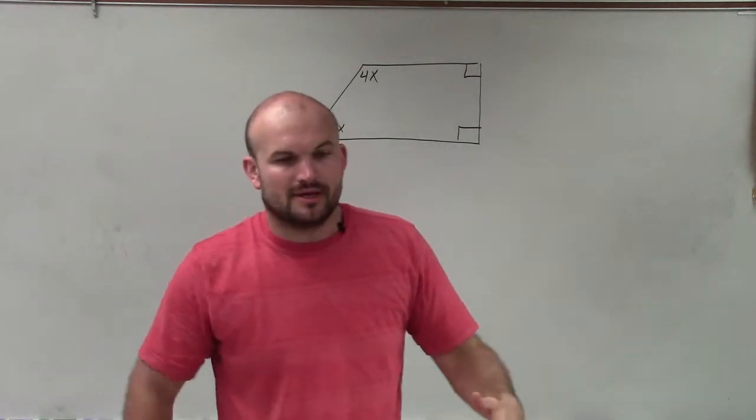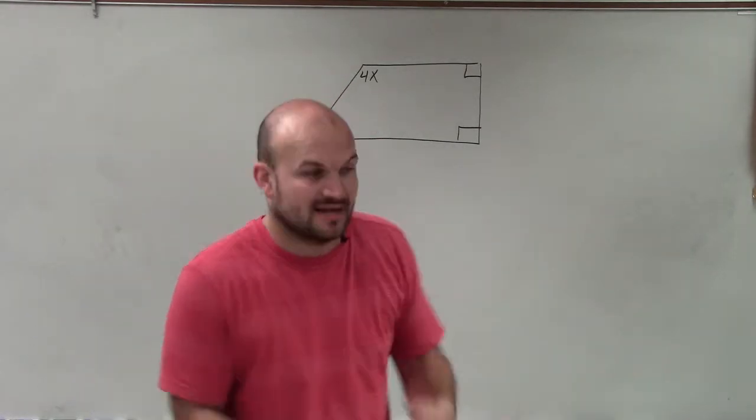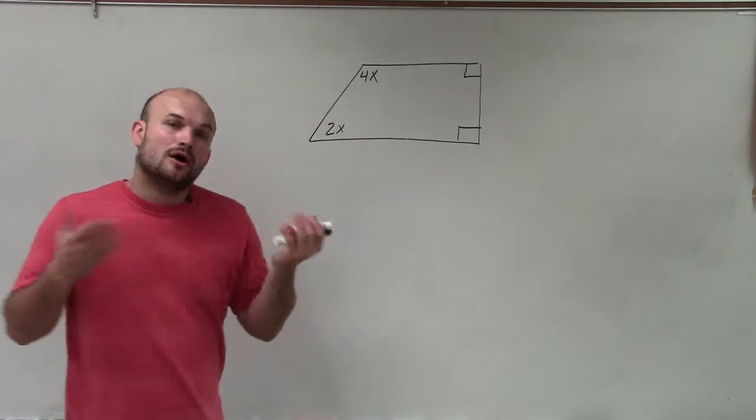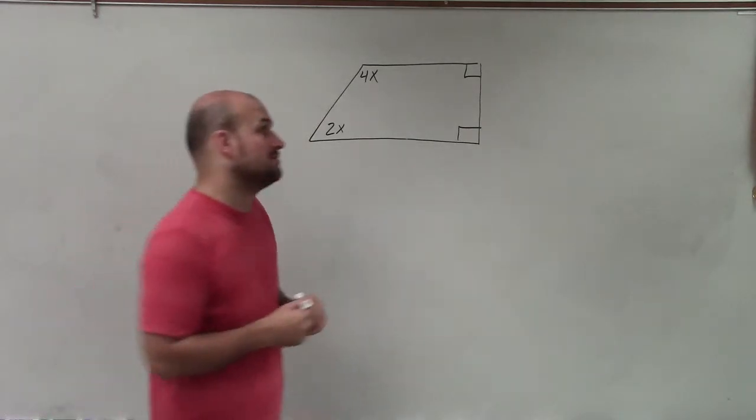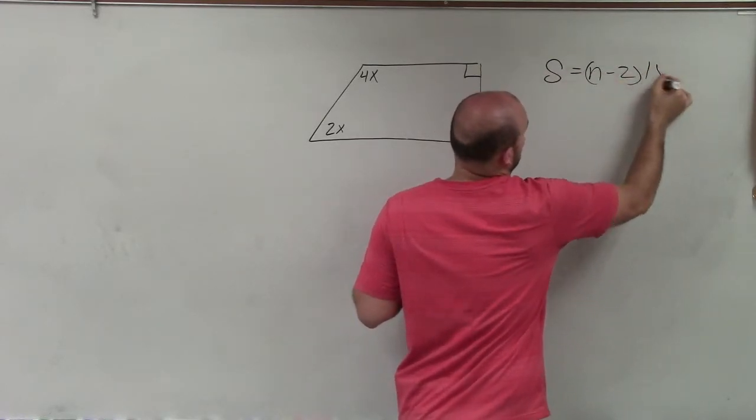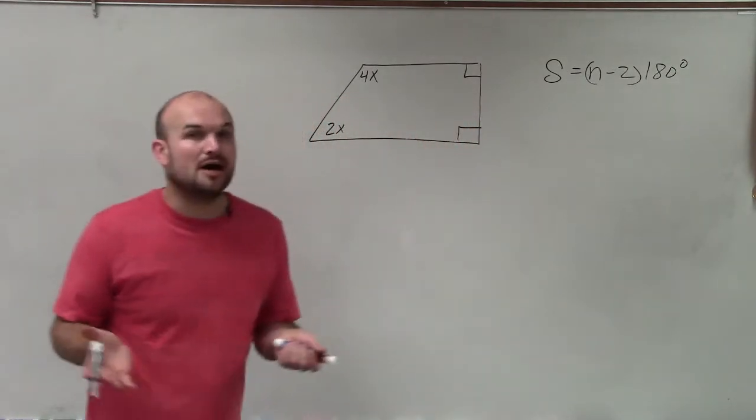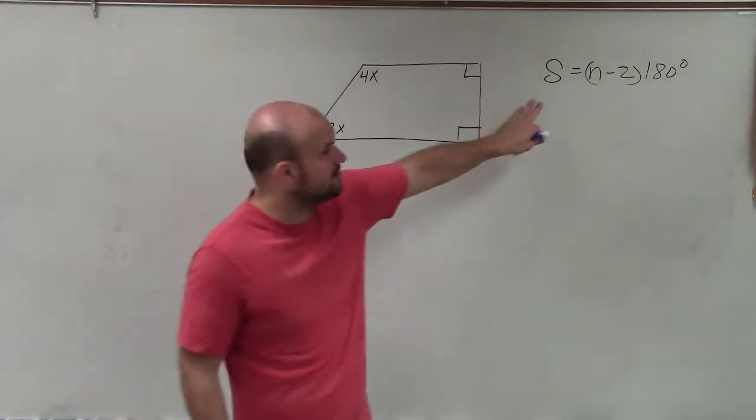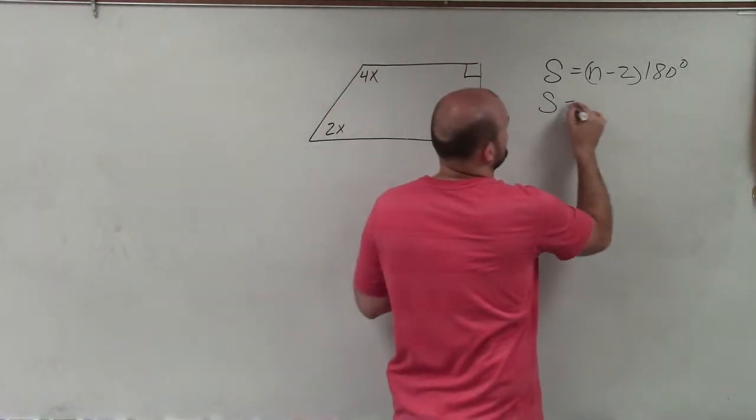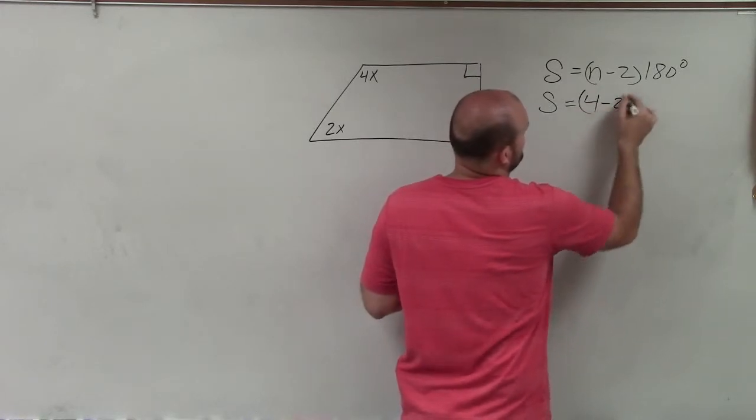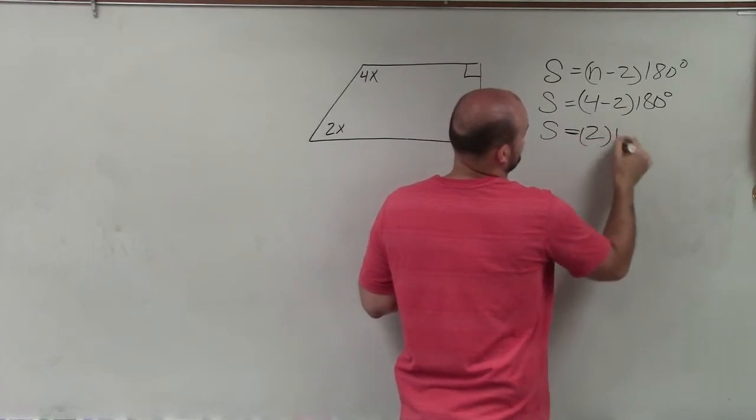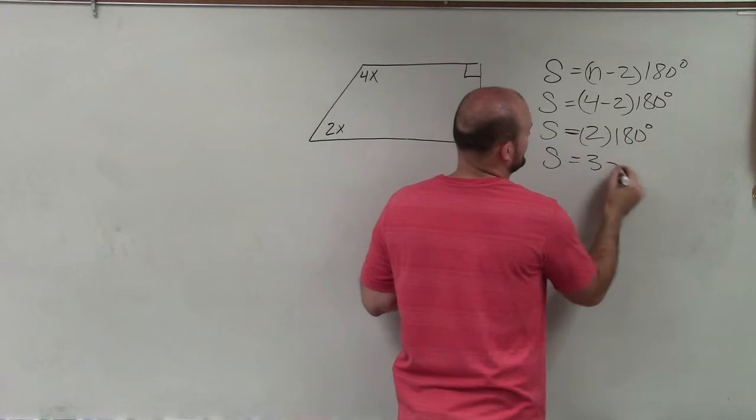So the first thing we need to understand is what is going to be the sum of all of these angles. And that is all based on the number of sides. And we can see we have 1, 2, 3, 4 sides. Now, hopefully by the end of this course you should automatically know what the sum is for a quadrilateral. But if you don't, we at least need to know this formula that we can always use to figure out the sum of the interior angles based on the number of sides, where s represents the sum of the interior angles and n represents the number of sides. So all I'm simply going to do is say s equals 4 minus 2 times 180 degrees. s equals 2 times 180 degrees. So s equals 360 degrees.